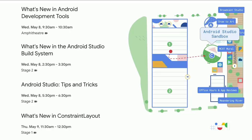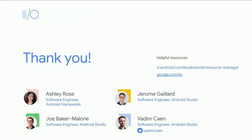This year is packed with Android Studio talks. Right after this in the amphitheater, watch 'What's New in Android Development Tools' presented by Tor and Jay. Then 'What's New in the Android Build System' on stage two this afternoon. Also 'Android Studio Tips and Tricks' on stage two, and tomorrow 'What's New in ConstraintLayout and MotionLayout' by Nicolas and John. We'll be taking questions right outside. Thank you very much for coming.